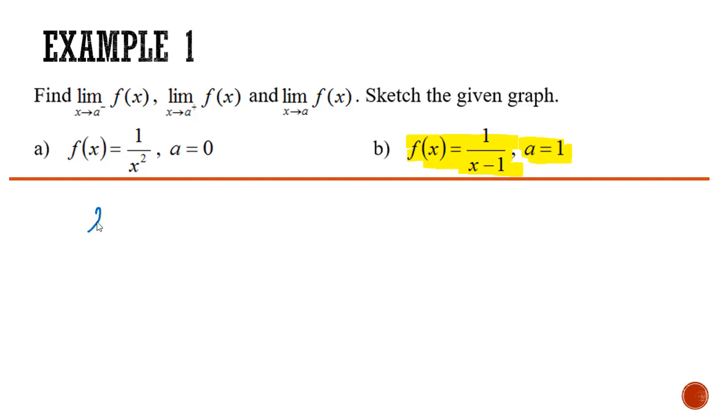The denominator is a linear function x minus 1. It can be positive, it can be negative. Approaches 1 from left is the interval less than 1. Therefore, x minus 1 less than 0, denote 0 minus. After we substitute the 0 minus, the overall ratio is a negative.